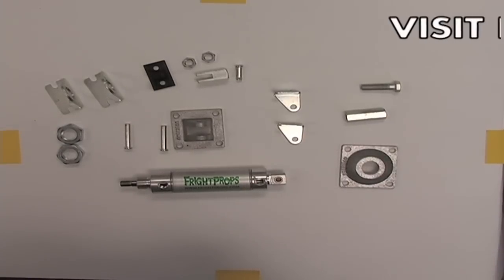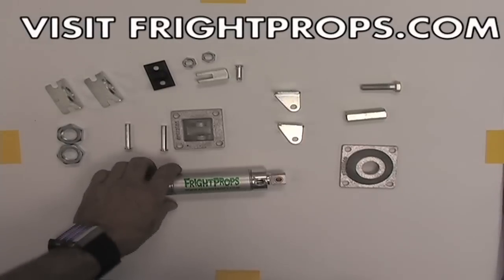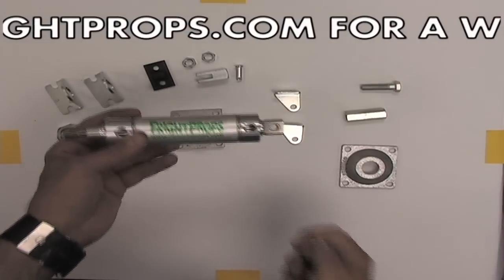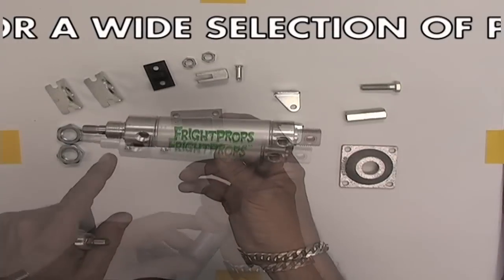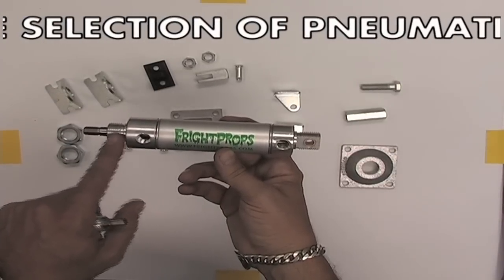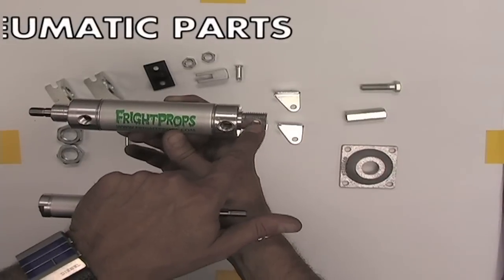In this video I'm going to show you the various cylinder mounting options that Fright Props has to offer. We're going to be using a double acting universal mount cylinder. A universal mount cylinder has threads on the front and the rear, and it also has a pivot hole here.